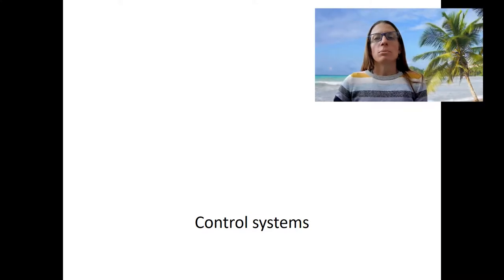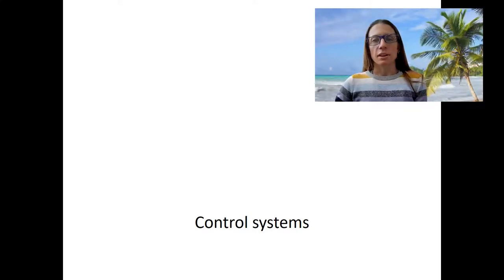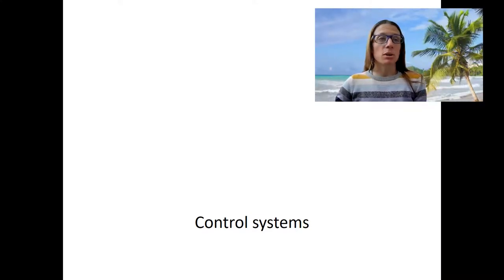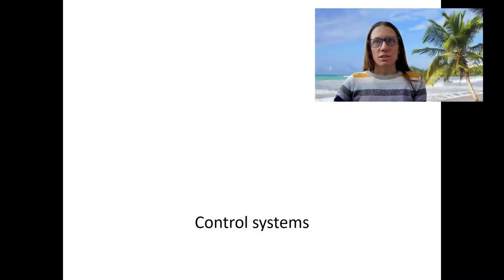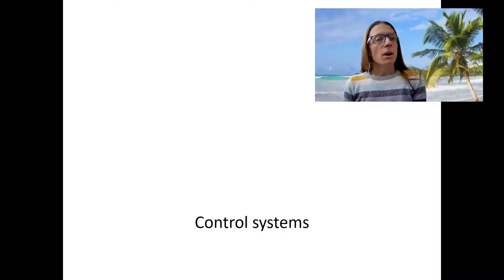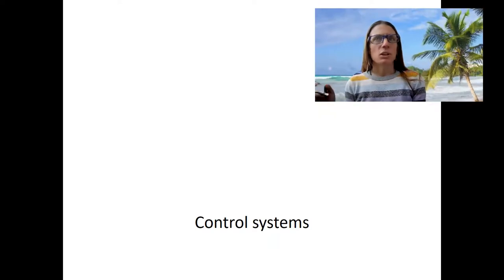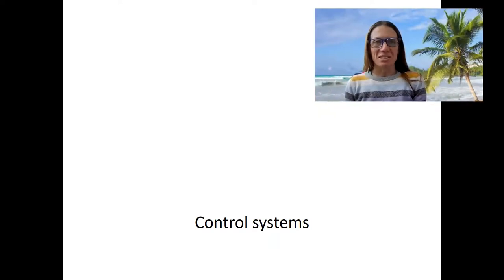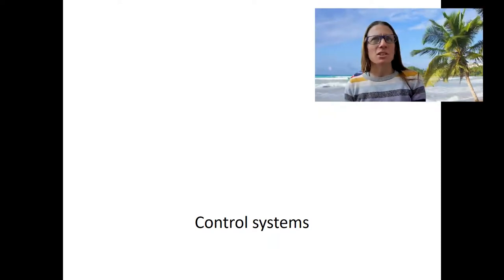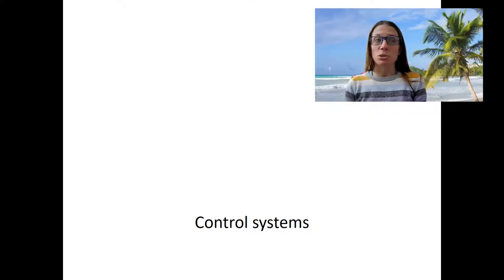Before talking about the endocrine system in more detail, it makes sense to talk about control systems — the nervous and endocrine systems — and compare them so we can really understand what the endocrine system does and why we have these two different control systems.